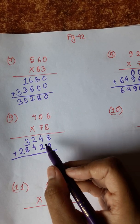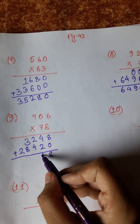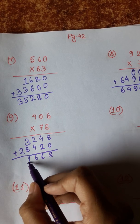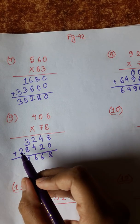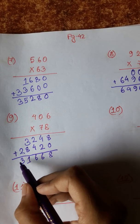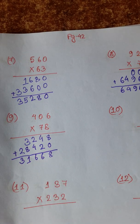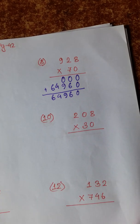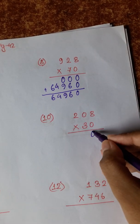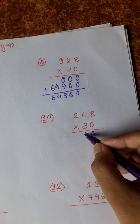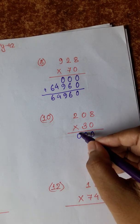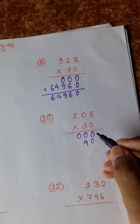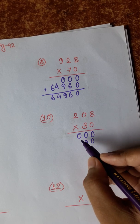8 plus 0 is 8, 4 plus 2 is 6, 4 plus 2 is 8, 6, 8, 8 plus 3 is 8. 8 8 8 0s are 0, 8 0s are 0. 8 3s are 24, 8 3s are 24, 8 2, 3 0s are 0.